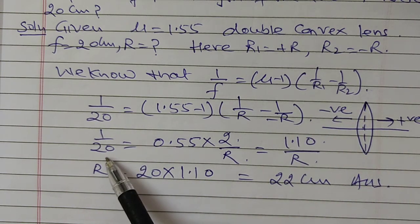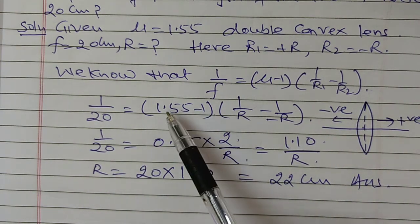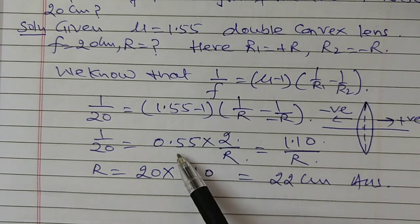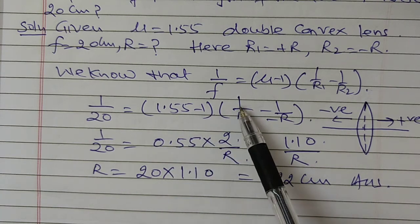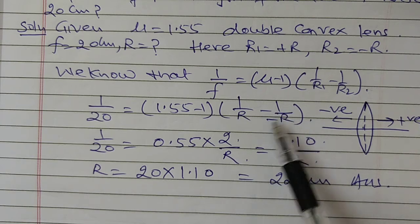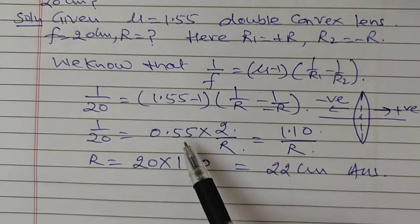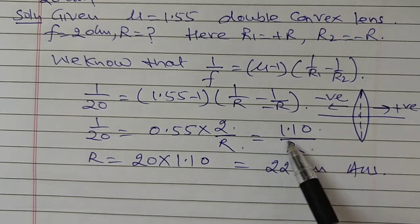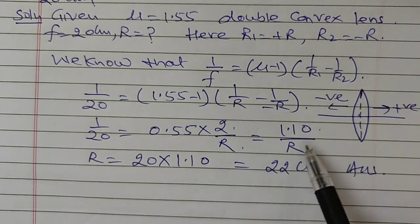Therefore, 1 upon 20 is equal to 0.55, and this is 1 upon R plus 1 upon R, which is 2 upon R. Therefore, 0.55 into 2 is 1.10 upon R.